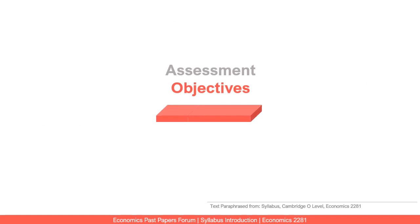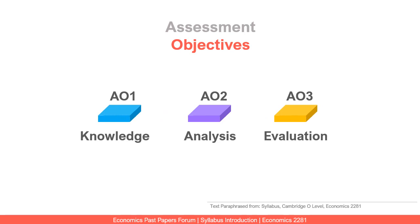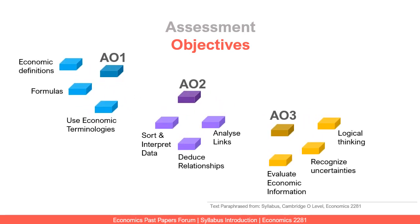The assessment objectives have three parts: assessment objective one, two, and three, which stand for knowledge, analysis, and evaluation. Assessment objective one revolves around understanding economic definitions, key terms, formulas, and terminologies. Analysis revolves around interpreting data, finding relationships, and analyzing the effect of one factor over another. Evaluation revolves around evaluating limitations, understanding contrasting viewpoints, understanding uncertainties, and thinking in a logical way.